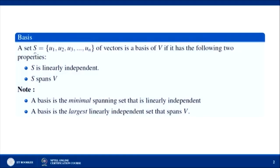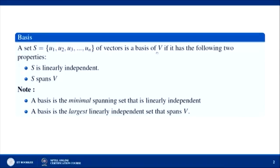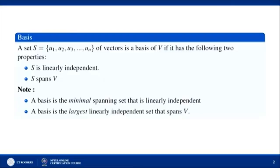First, what is a basis? A set S = {u₁, u₂, ..., uₙ} of vectors is a basis of V if it has two properties: number one, S is linearly independent; and number two, the span of S generates V, meaning span(S) = V. That is, by linear combinations of elements of S we obtain the entire vector space V. We will discuss a few examples to make things clear.